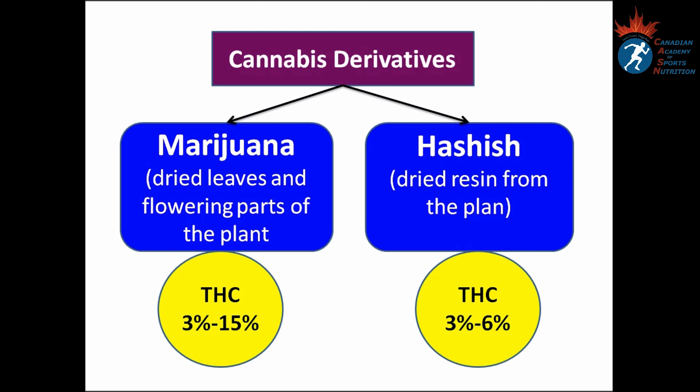Two famous derivatives of cannabis are marijuana and hashish. Marijuana is basically the dried leaves and flowering parts of the plant, but hashish is the dried resin from the plant. Based on medical references, the concentration of THC in marijuana can vary from 3% to 15%, and the concentration of THC in hashish is 3% to 6%, though based on certain articles the concentration of THC in hashish can be very much higher.